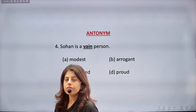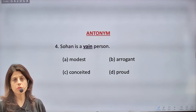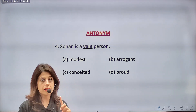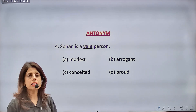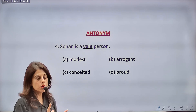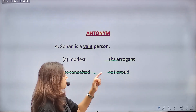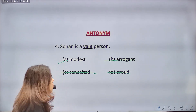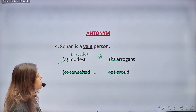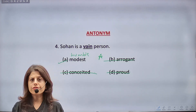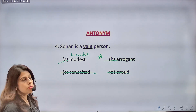Next: 'Sohan is a vain person.' Recall — vain was a synonym of abortive, meaning useless. But vain also means someone full of show-off and ego. Mark the ANTONYM. Options: arrogant (negative — eliminate), proud (negative — eliminate), conceit (means proud — eliminate). Only modest remains. Modest means humble, down-to-earth, submissive — the opposite of vain. Correct answer: MODEST. Conceit also means proud/ghaman.